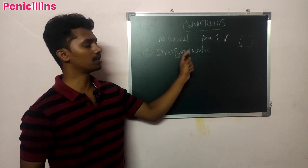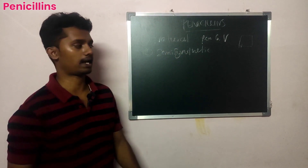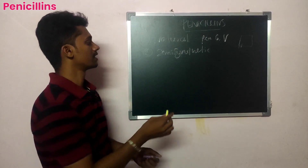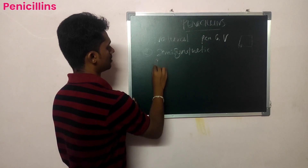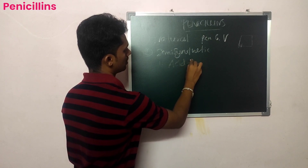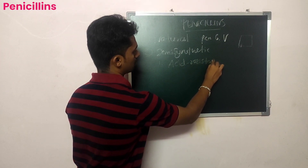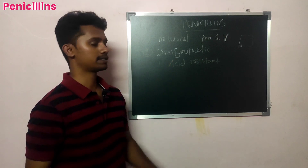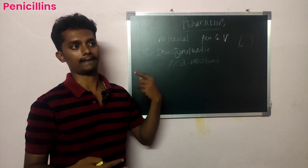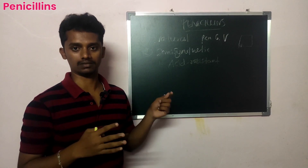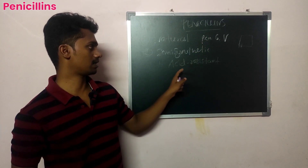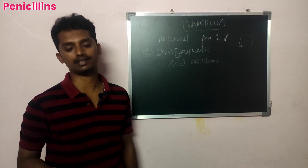The first sub-category of semi-synthetic derivatives is acid-resistant penicillins. Penicillin G is acid-degraded and metabolized in the stomach, so it cannot be taken orally. That is why acid-resistant penicillin was created. Penicillin V is an example of an acid-resistant penicillin.